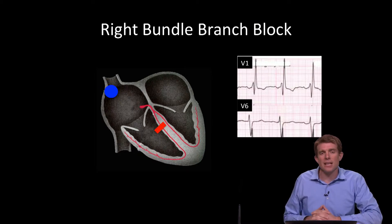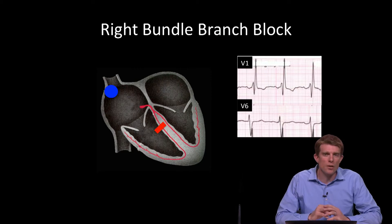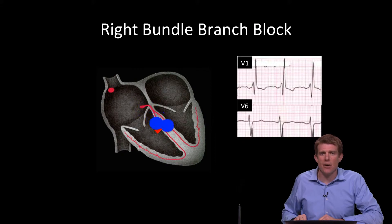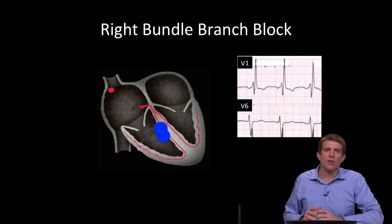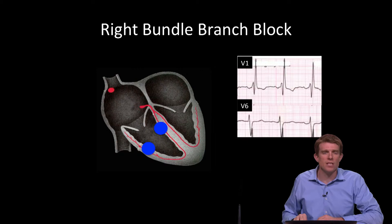Remember that V1 is sitting over by the right side of the heart as a detector and V6 over by the left side of the heart. So when you look at V1, you'll notice that that electrical current is coming at V1 towards the end. The electrical current at the end is coming across towards V1 and away from V6, meaning you're going to have an upward deflection at the end of the QRS complex in V1 and a downward deflection at the end of the QRS complex in V6.